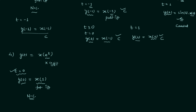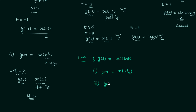Now let's move to the homework problems. There are three: the first is y(t) equal to x(sin t); the second is y(t) equal to x(t/4); and the third is y(t) equal to e^(2t) multiplied by x(t-1). You need to find out if these systems are causal or non-causal, and once you have your answer, post it in the comment section.